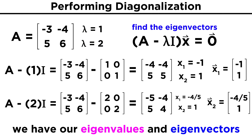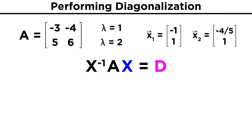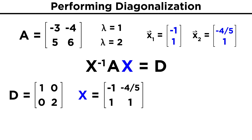Now that we have all of our eigenvalues and eigenvectors, we can write out the diagonal matrix D and the matrix X. D will simply be the eigenvalues along the diagonal: D equals one, zero, zero, two. X will have the eigenvectors as columns, and now that we have chosen an order for the eigenvalues, we must keep that order in mind. The eigenvector for lambda equals one must be our first column, while the eigenvector for lambda equals two will be our second, making our matrix X equal to negative one, negative four fifths, one, one.